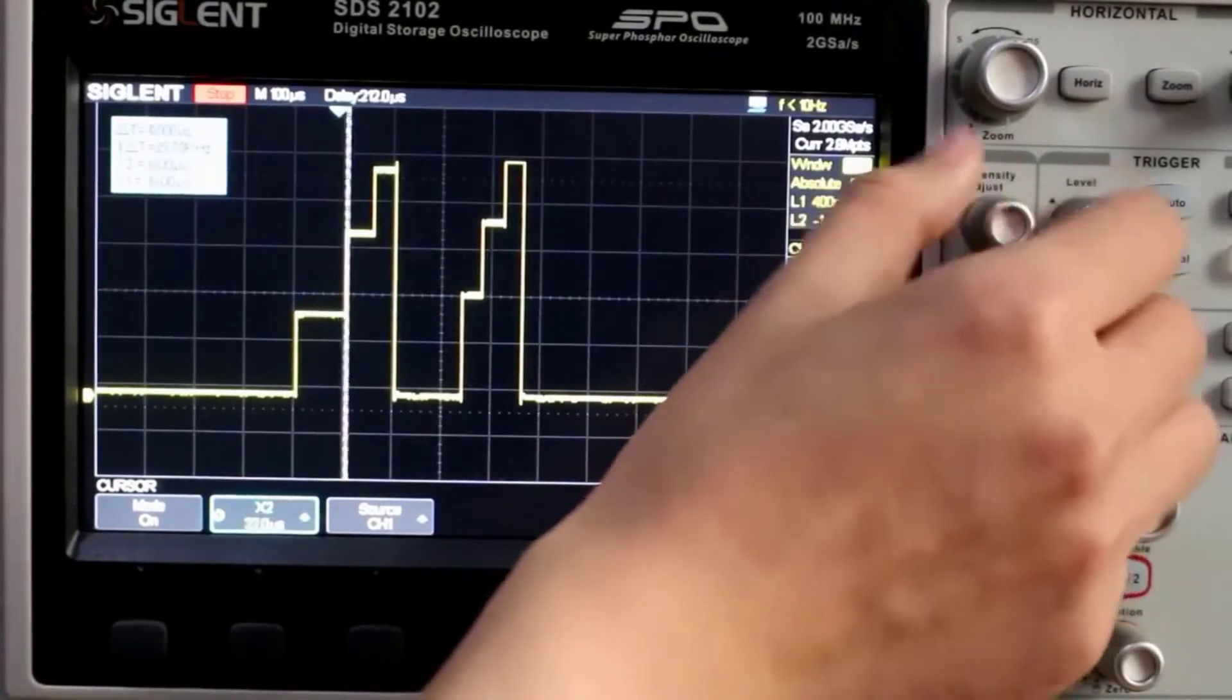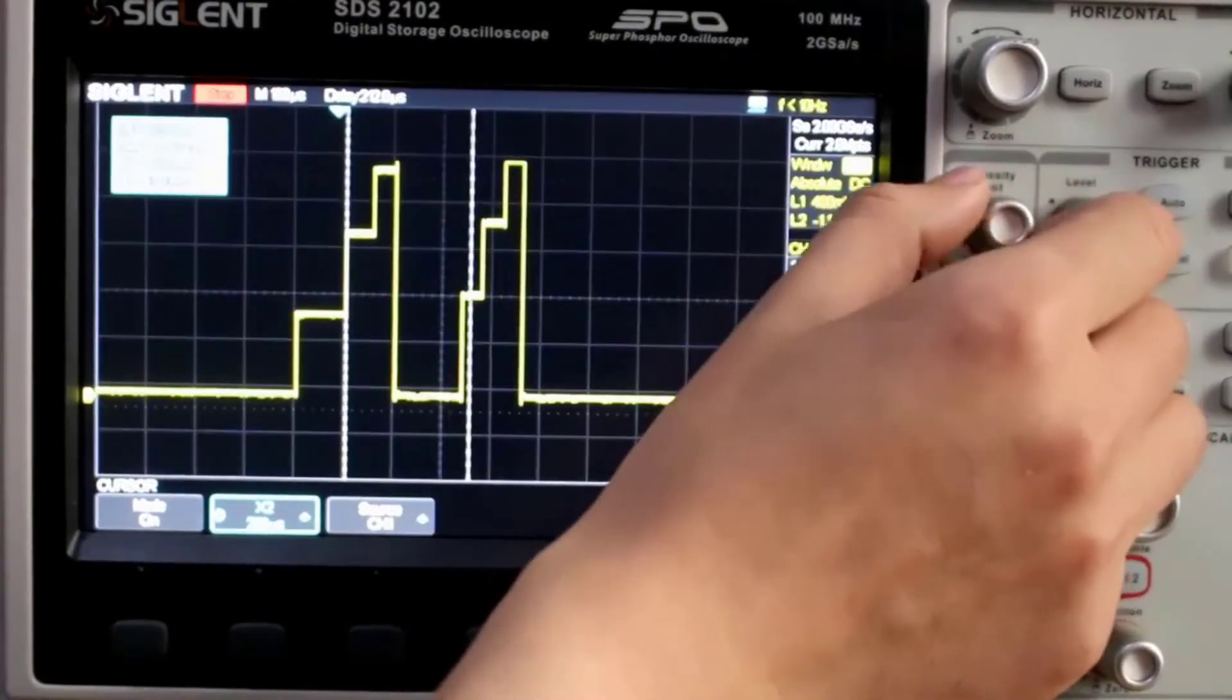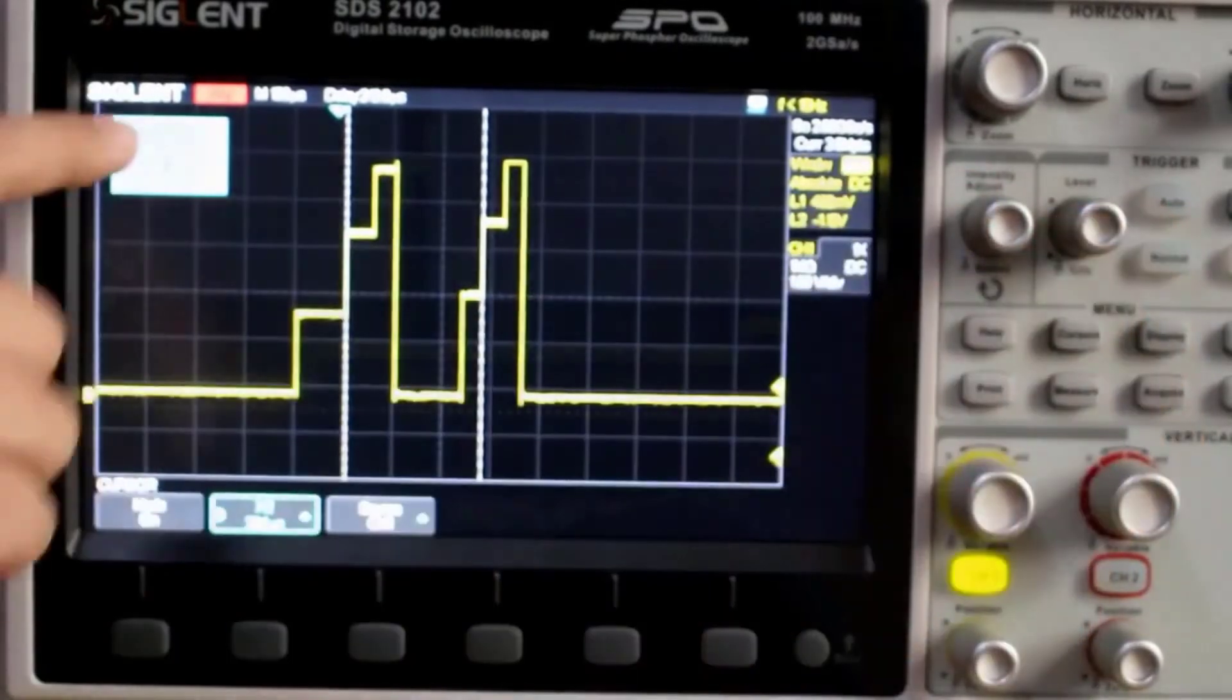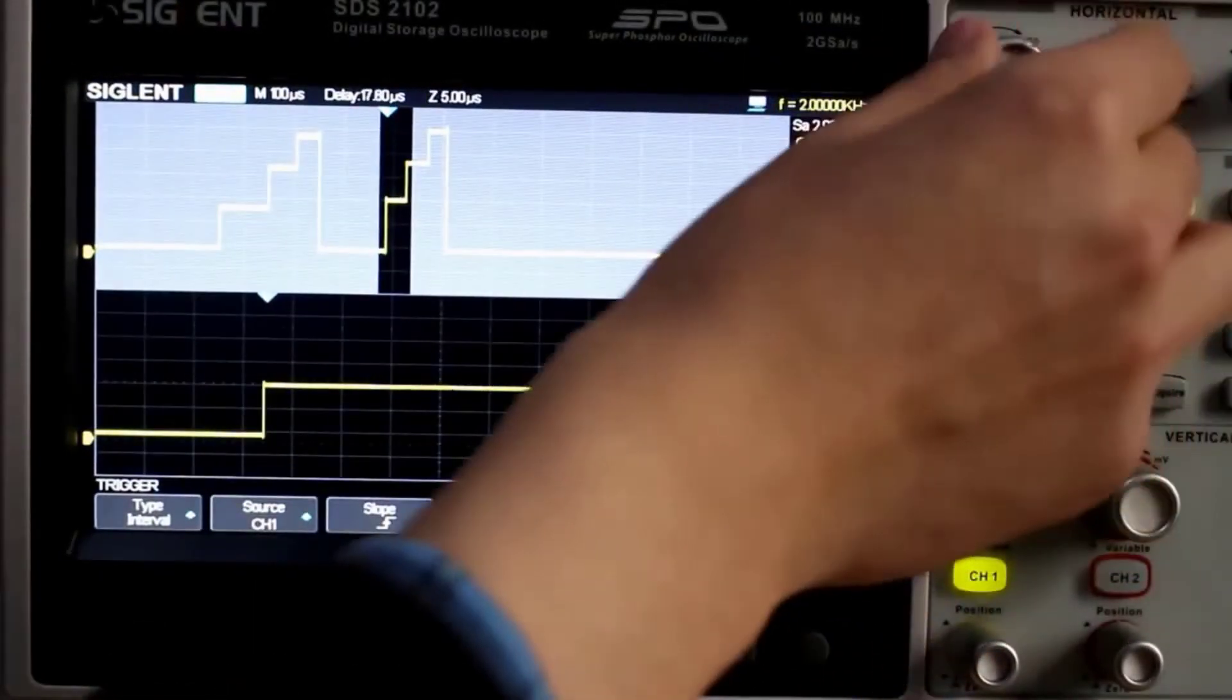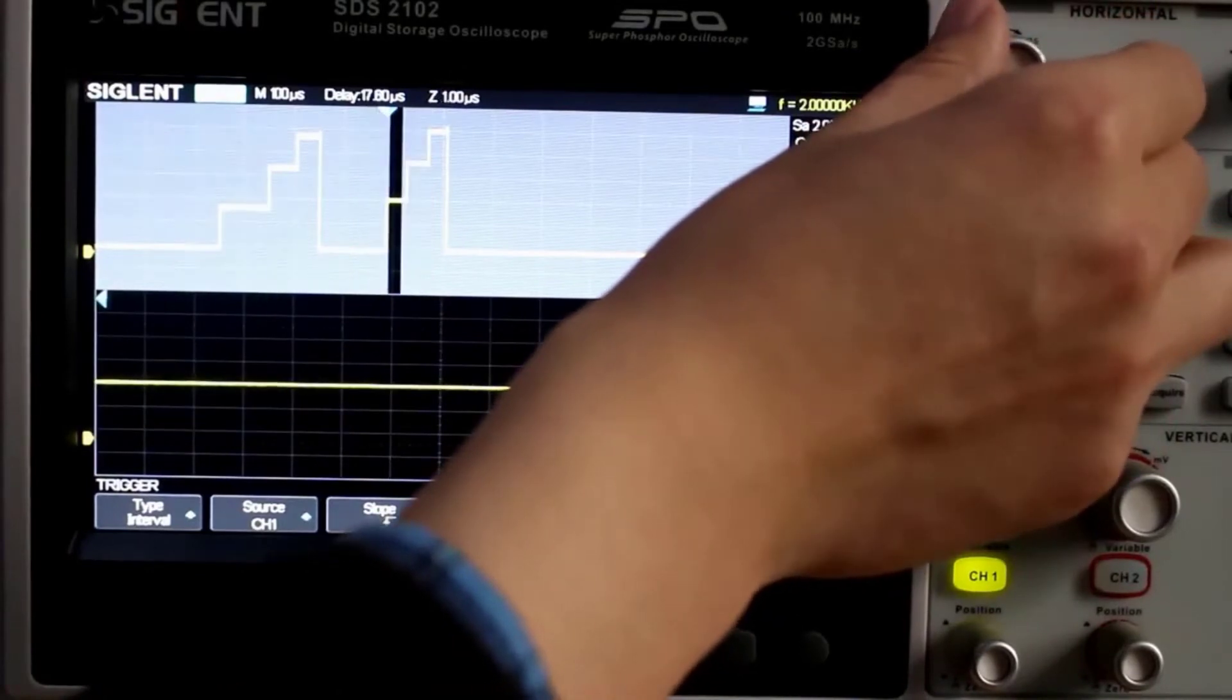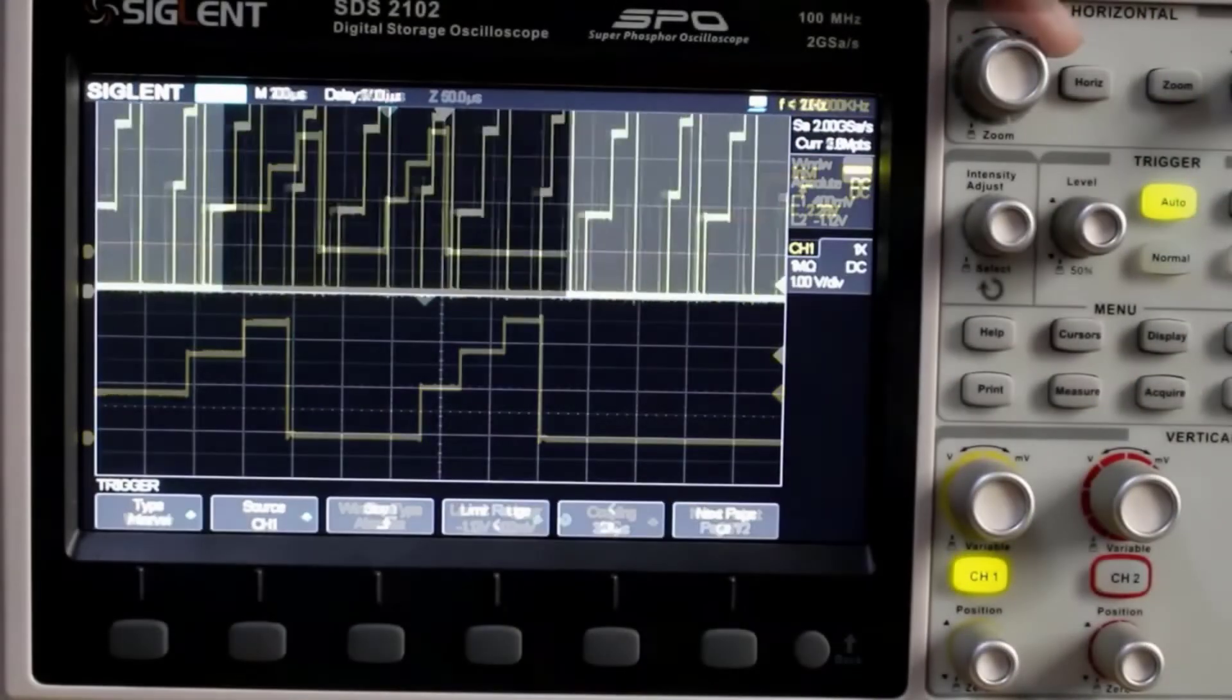Other features include automatic measurements, cursors, and a built-in frequency counter, and a 1MPTS record length on a single channel. It even comes with two great 100 MHz probes, although we have to say that the plastic case isn't as durable as the oscilloscope itself.